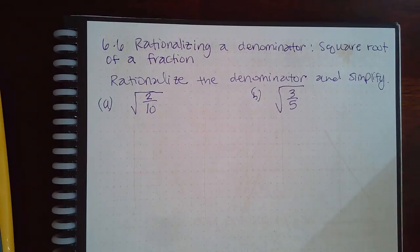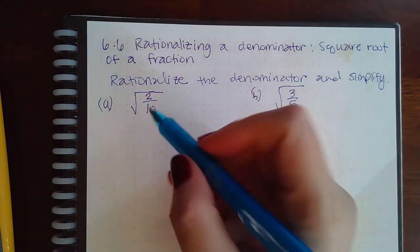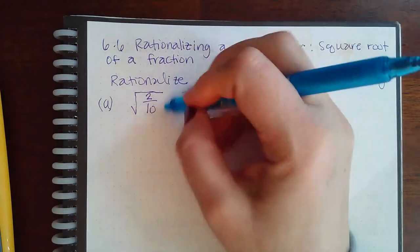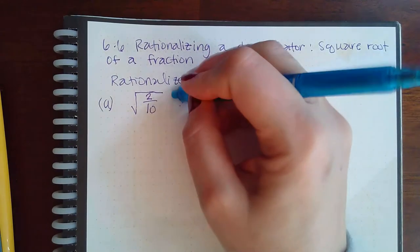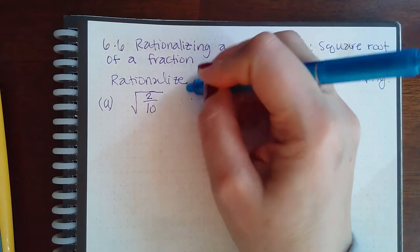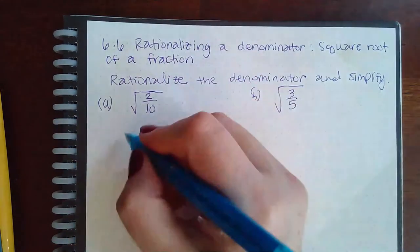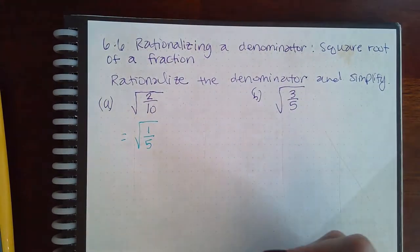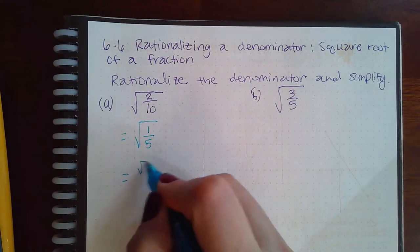Here we have rationalizing a denominator, the square root of a fraction. Before we can rationalize the denominator, we actually have to separate that fraction first, and before you separate it, you always want to reduce. So we can reduce this fraction first and get the square root of one-fifth.